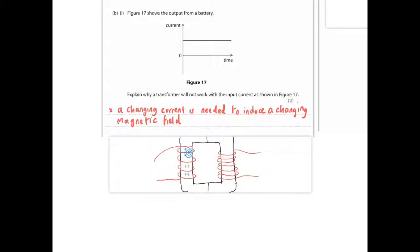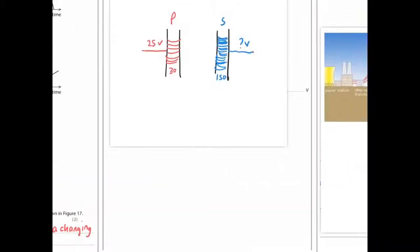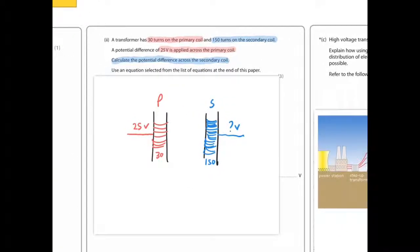A transformer has 30 turns on its primary coil and 150 turns on its secondary coil. A potential difference of 25 volts is applied across the primary coil. Calculate the potential difference across the secondary coil using an equation selected from the list of equations at the end of this paper.